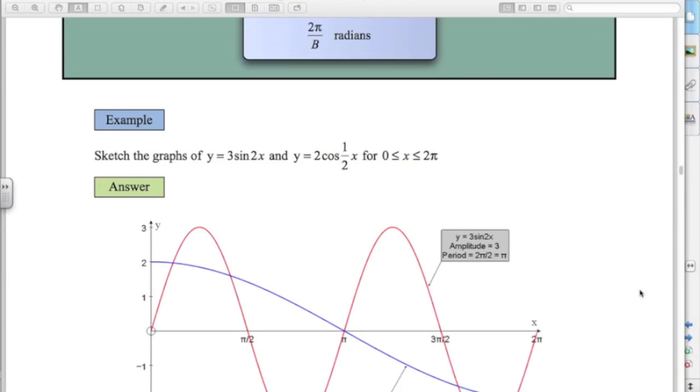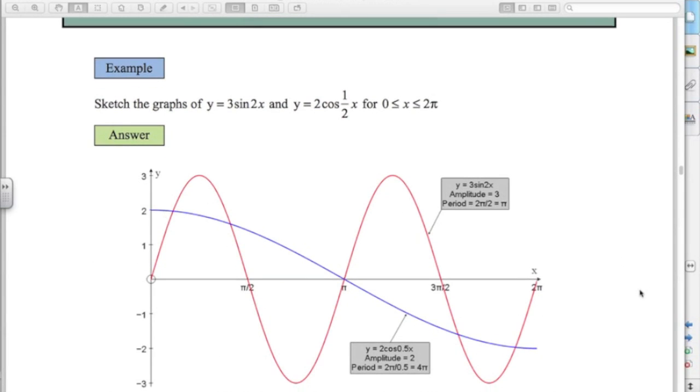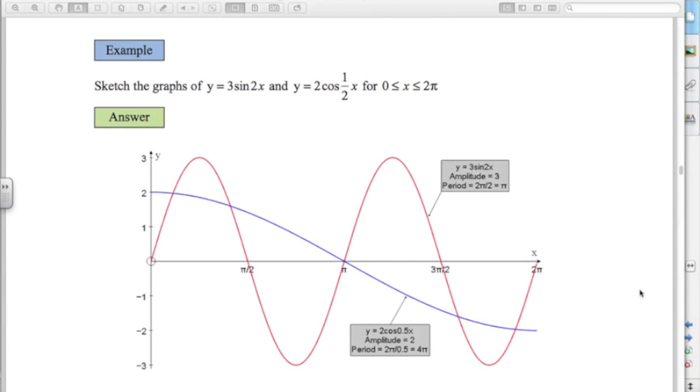So here's the graphs of 3 sin 2x and 2 cos 1 half x. 3 sin 2x has an amplitude of 3 and it repeats twice in 2 pi. 2 cos 1 half x has an amplitude of 2, so it goes between 2 and minus 2. And it repeats half as many times in 2 pi. So in other words it only gets through half the amount it normally would in 2 pi. So the period of this function here would be 4 pi.